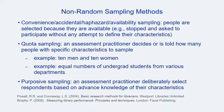Another non-random approach is quota sampling. In a quota sample, someone — perhaps the assessment practitioner or some other decision maker — decides how many people with specific characteristics to sample. An example might be a set number of faculty from each academic department. In purposive sampling, an assessment practitioner might deliberately choose respondents or participants based on advanced knowledge of their characteristics, with each respondent selected on purpose for particular reasons, typically at the individual level.